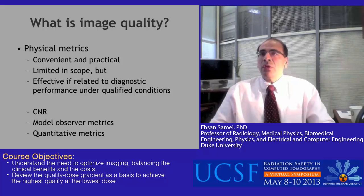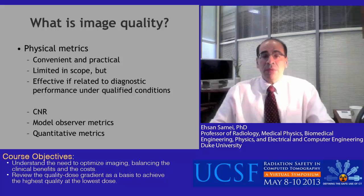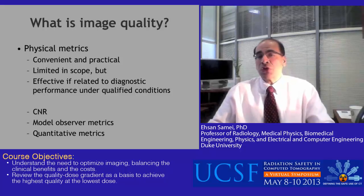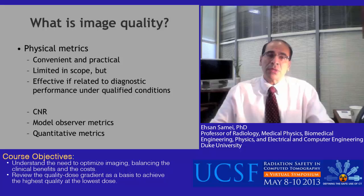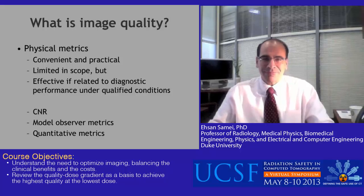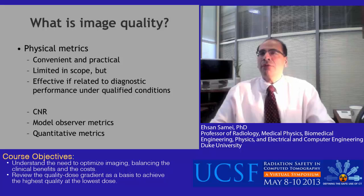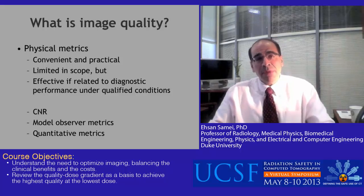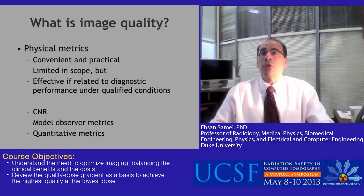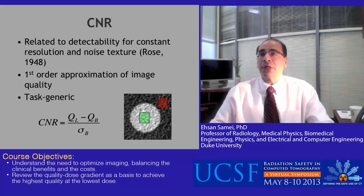As a result, we have developed physical metrics of image quality by imaging specific objects — we call them phantoms — and measuring attributes such as radiation dose, resolution, and noise. However, the measurements are limited in scope, but they can be related to diagnostic performance under very qualified conditions.